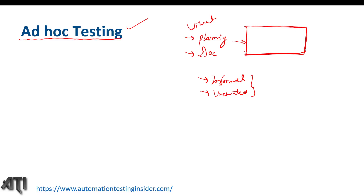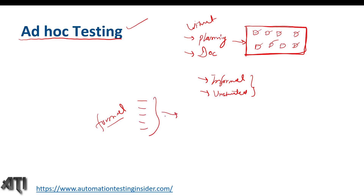In ad hoc testing, let's say we have different functionalities and different components in our application — we'll randomly check the functionalities of those components, and that is kind of ad hoc testing. Generally, after we execute the formal test cases, if we still have some time left in testing, we'll go for ad hoc testing to learn more about the application and to uncover some important defects.